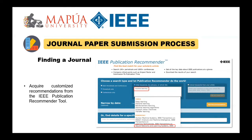You can input keywords or upload your article to receive customized suggestions. Click on a publication title in the search results to access important data about the publication, including the aims and scope, bibliometric scores such as the impact factor, open access availability, and the average time from submission to online publication. You can check all of this information by going to the IEEE publication recommender.